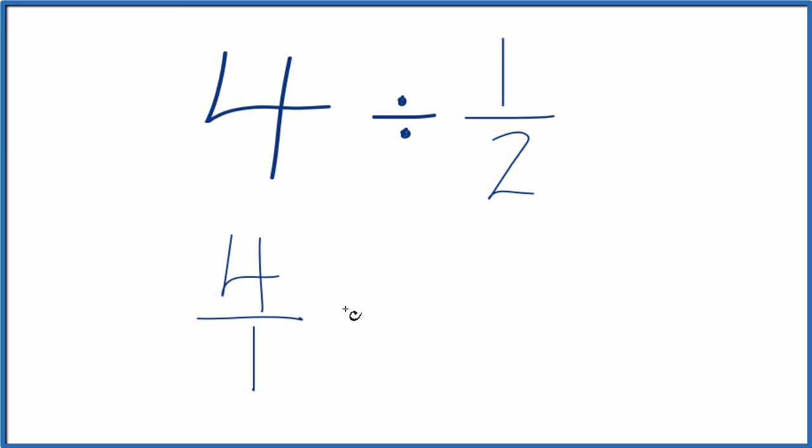Next, instead of division, let's multiply by the reciprocal of 1 half. To take the reciprocal of a number, you move the numerator down and the denominator up. So we have 2 over 1. 2 over 1, that's the reciprocal of 1 half.